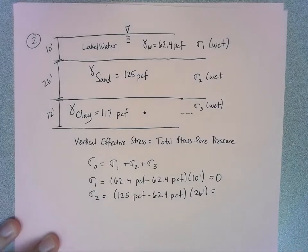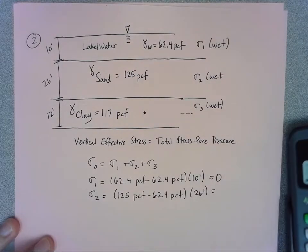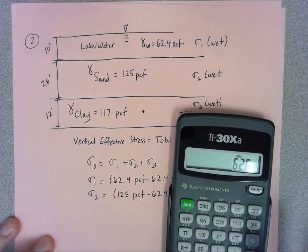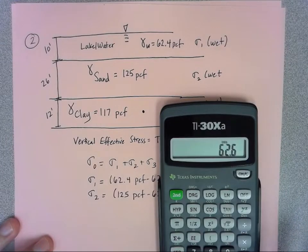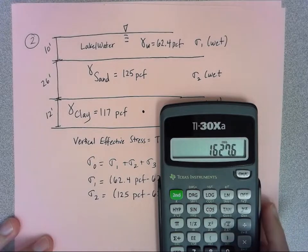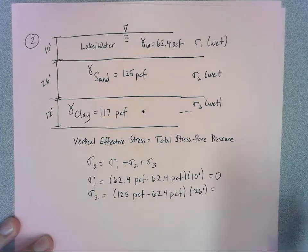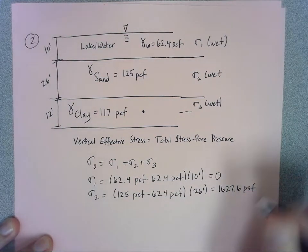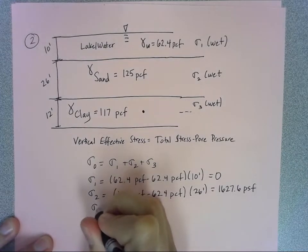So we've got 125 minus 62.4 - my first step is subtracting off that unit weight of water - and then I'm going to multiply it by the thickness of the layer, 26. I get 1627.6 pounds per square foot, so that's my sigma 2.